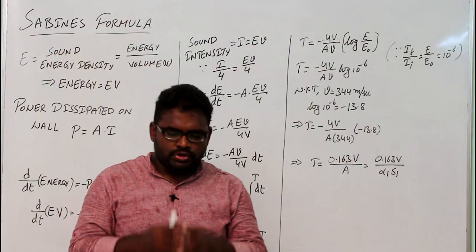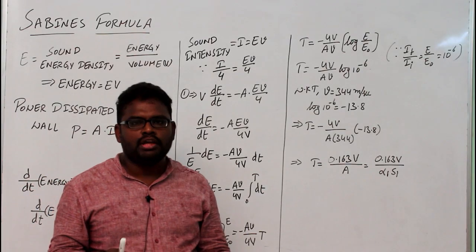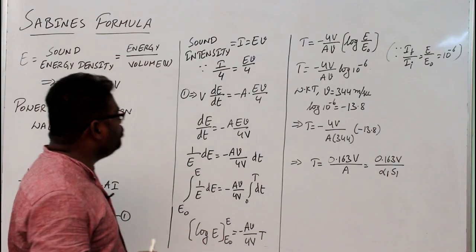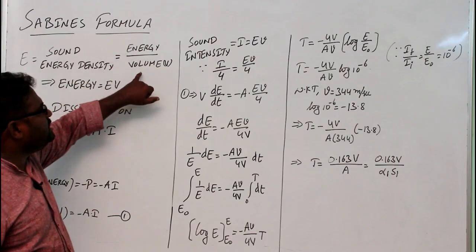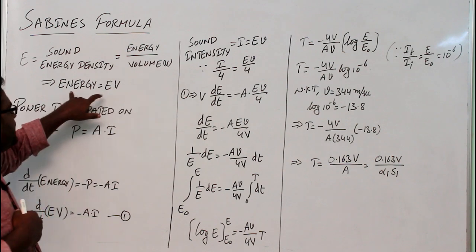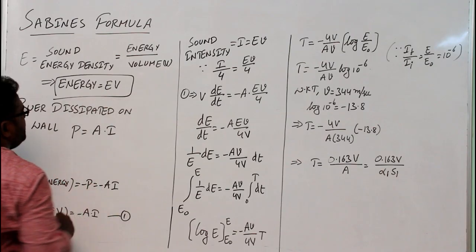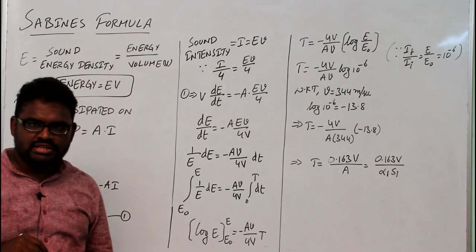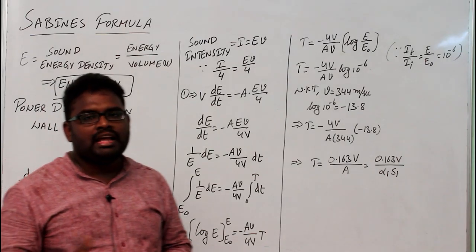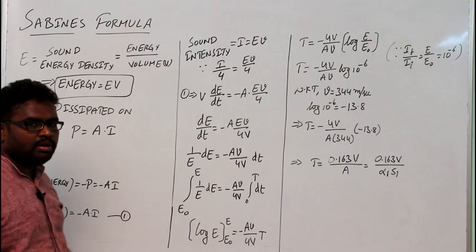Reverberation time should not be too short or too long — it should be an optimum value. Now, coming to the derivation: let us assume we are producing a steady state of sound in a room. Let the energy density in the room be defined as energy per volume, so energy E equals energy density e times volume V. For simplicity, assume whatever sound is incident on the wall is completely absorbed — no reflection — so the absorption coefficient of the wall equals one.